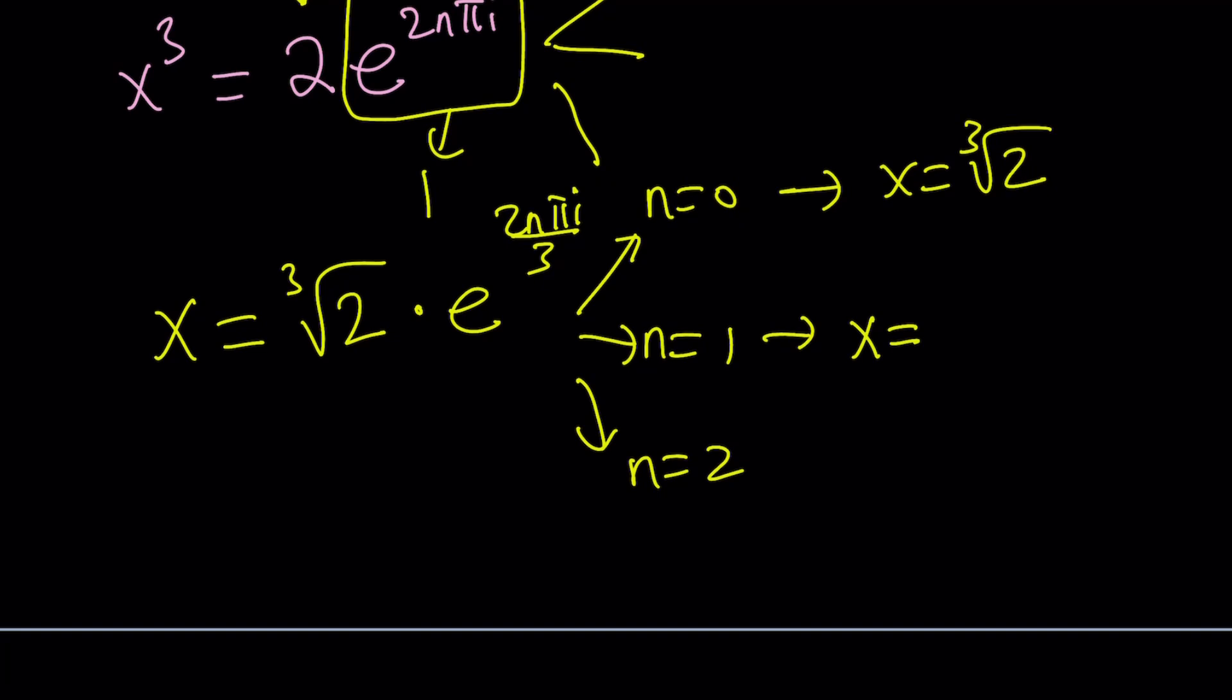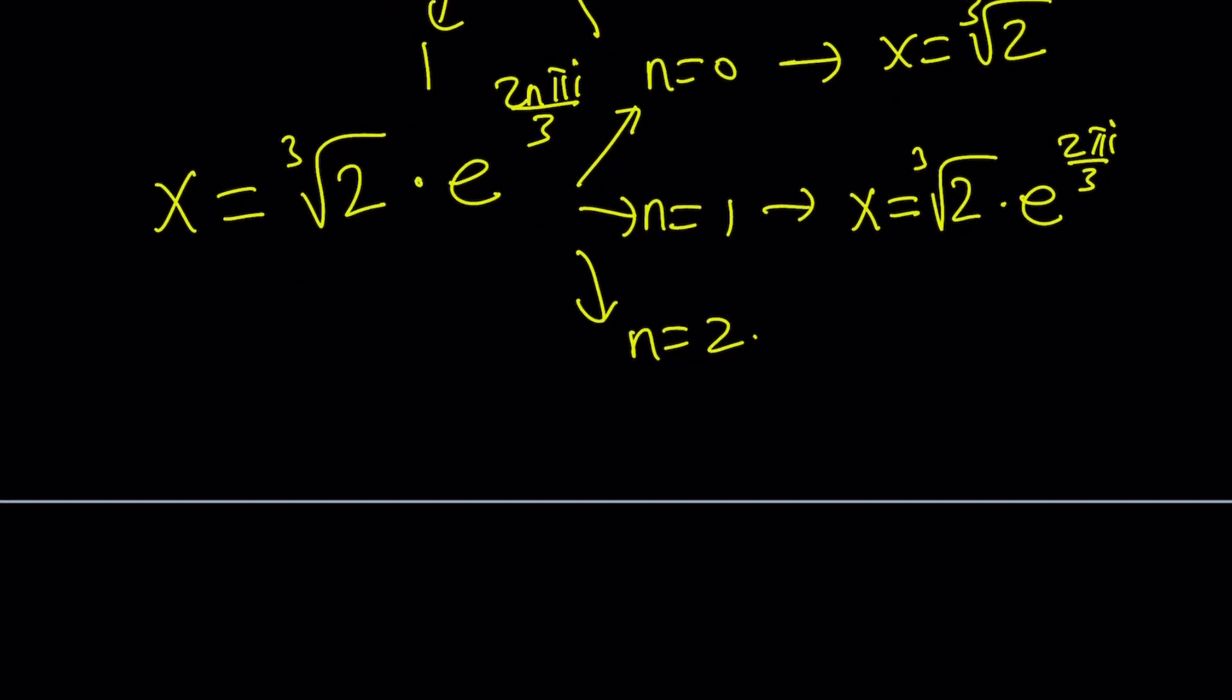If n is equal to 1, that's going to be x equals cube root of 2 times e to the power 2 pi i over 3. Notice that if n is 1, we're going to get 2 pi i over 3. So we kind of have to worry about the values of 2 pi over 3, which we'll talk about next. And then the other one is just going to be the cube root of 2 times e to the power 4 pi i over 3. And then if you make n equals 3, you're going to go back to n equals 0 because that's going to give you 6 pi over 3, which is 2 pi. Great. So those are the solutions.